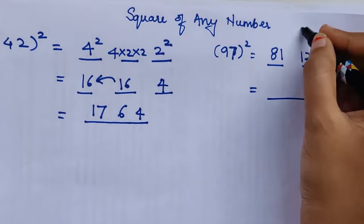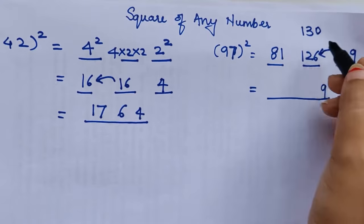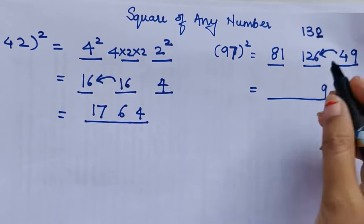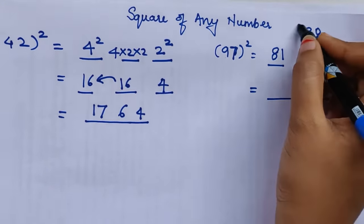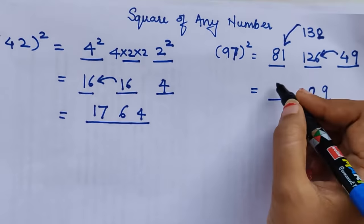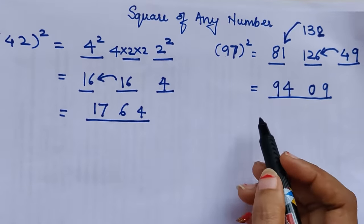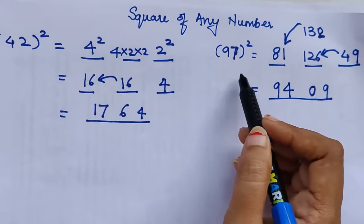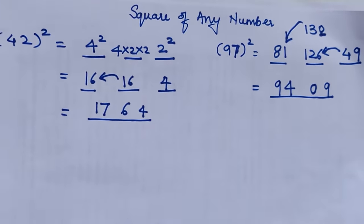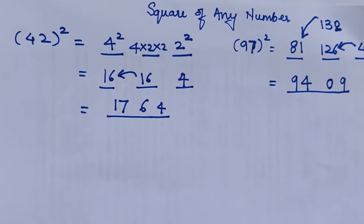For my final answer, I'll be just considering the unit part. So 9 is written as it is, 4 is added to 126, we get 130. I will just consider the units place, that is 0, and 13 gets added to 81. That gets us 94. So now you can see how easily you have found the square of any number.